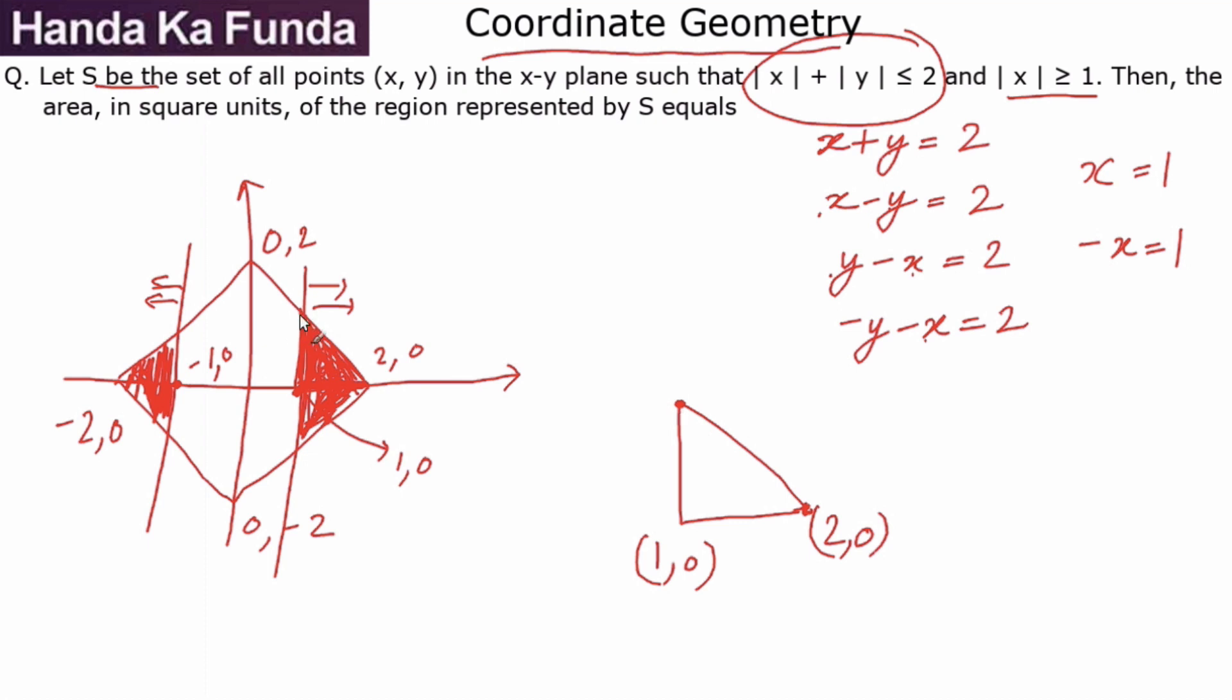The top point will be when x = 1 and x + y = 2 intersect. If I put x = 1 in this, what do I get for the value of y? I get the value of y as 1, so this is (1, 1).